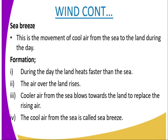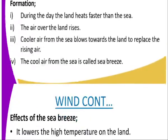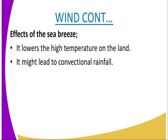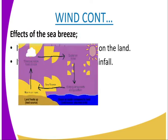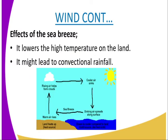The soil is a better conductor of heat than water. The air over the land rises while the cool air from the sea blows towards the land. The cool air blowing from the sea to the land is what is referred to as the sea breeze. It affects the weather by lowering the high temperatures on the land, making the land cooler. It also produces conventional rainfall, which is one form of precipitation. You can see that the warm air is rising, and cooler air comes to occupy that vacuum space.